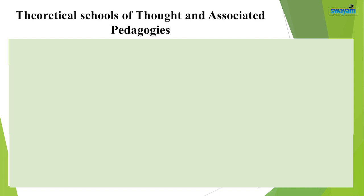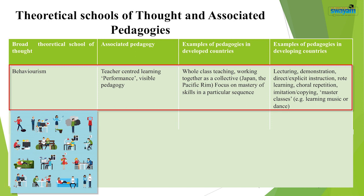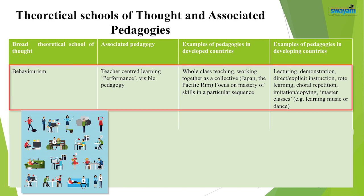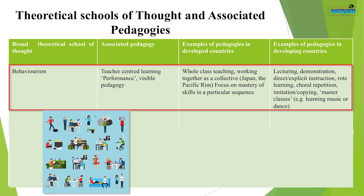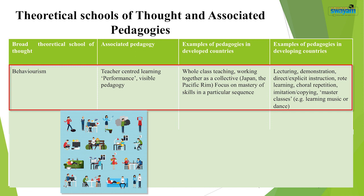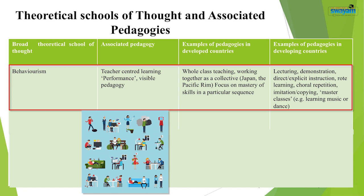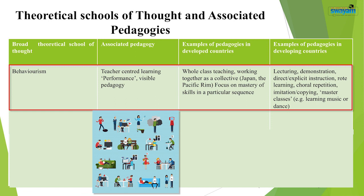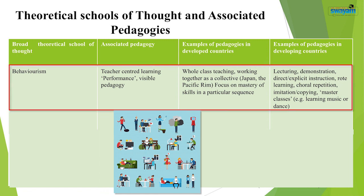We now come to the various philosophical schools of learning and their associated pedagogies. The first school is behaviorism — a school of learning where teaching is entirely teacher-centered and stimulus-response based. Learning is evaluated with the help of performance, and the pedagogy is very visible: the teacher teaches and collaborates with the whole class, and the whole class responds to the teacher only.